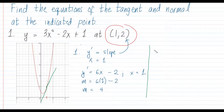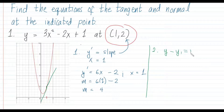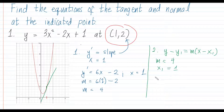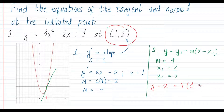Knowing that, we apply the slope-point formula from analytic geometry or pre-calculus: y − y₁ = m(x − x₁). We have m = 4 and the point is (1, 2), so x₁ = 1 and y₁ = 2. Substituting: y − 2 = 4(x − 1).